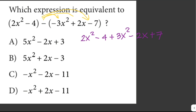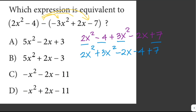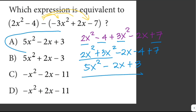Combining like terms: 2x² and 3x² go together to give 5x². Then -2x stays, and -4 and +7 go together to give +3. So the result is 5x² - 2x + 3. Therefore, the answer is letter A.